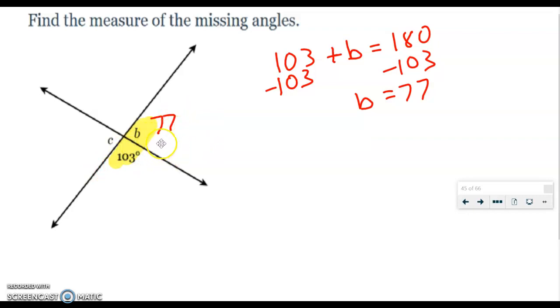Now that I know what angle B is, I can find the measurement of angle C. Because angle B and angle C are vertical angles, I don't even have to do any math on that. All I know is since they're vertical angles, they're equal. So angle C is also 77 degrees. So angle C is 77 and angle B is 77.